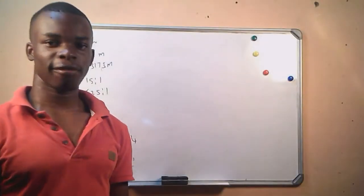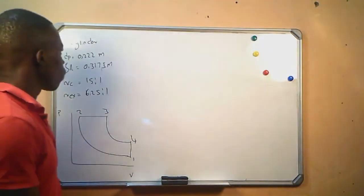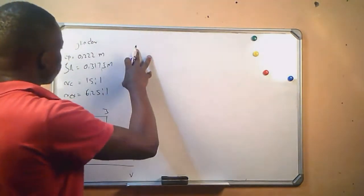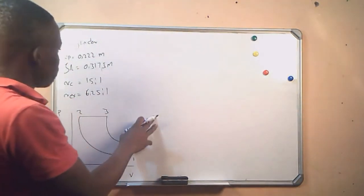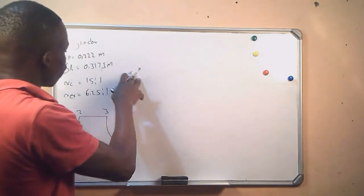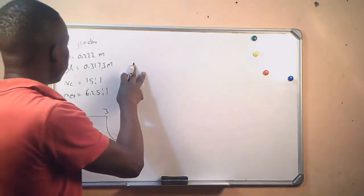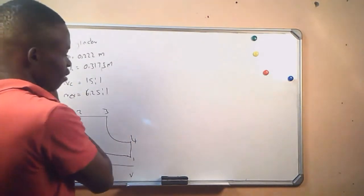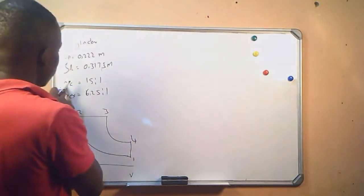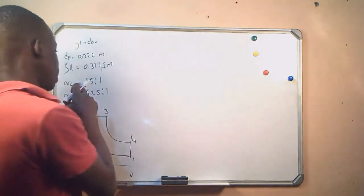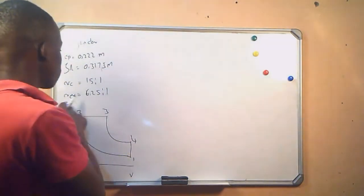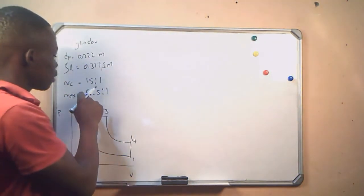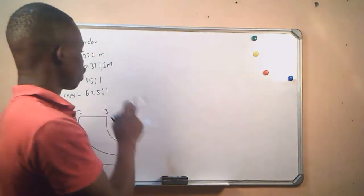This is the information we are given. The engine is a single cylinder with a piston diameter of 0.222 meters and a stroke length of 0.3175 meters. The compression ratio is 15:1 and the expansion ratio is 6.25:1.